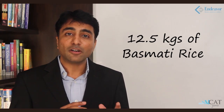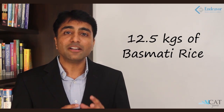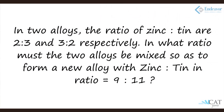Since the question mentions 25 kg of ordinary rice, the amount of basmati rice should be half of ordinary rice, that is 12.5 kilograms. The second type of question involves mixing two mixtures. Say we have two alloys, alloy A and alloy B, which have zinc and tin in the ratio 2 is to 3 and 3 is to 2 respectively, and we need to mix them to form a new alloy with zinc to tin in the ratio 9 is to 11.